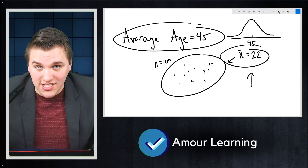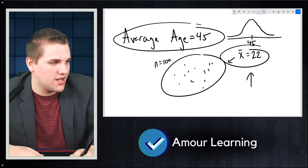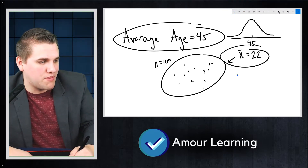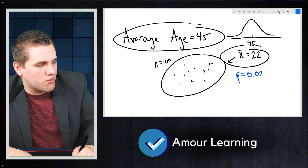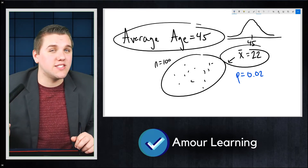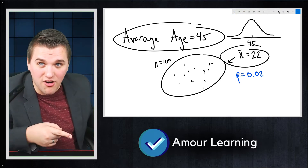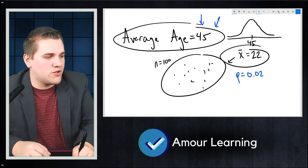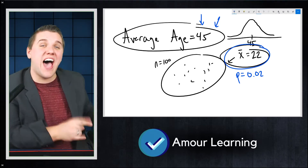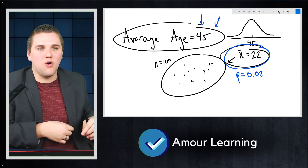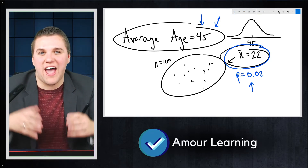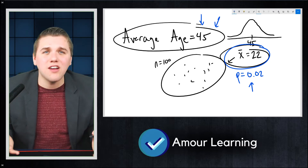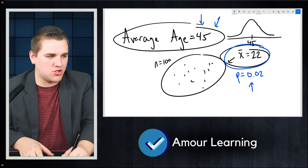So how rare is this event? That's where the p-value comes in. The p-value tells you how rare the event is. Whenever you conduct a test, you'll get a p-value. Let's say in this case we get a p-value of 0.02. That means that if the claim is in fact true, you would see an event that rare only 2% of the time. The smaller the p-value, the more rare the event is. The higher the p-value, the more common that result would be if the assumption were true.